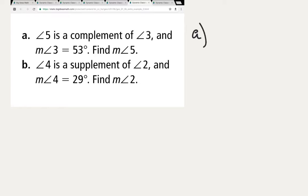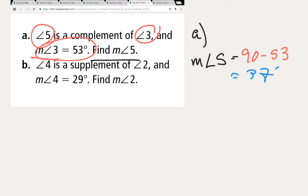Problem A. We're supposed to find the measure of angle 5. The measure of angle 5 equals, so 5 is a complement of 3. 3 is a 53 degree angle, so it would be 90 minus 53, whatever is left over. 90 minus 53 is 37 degrees.